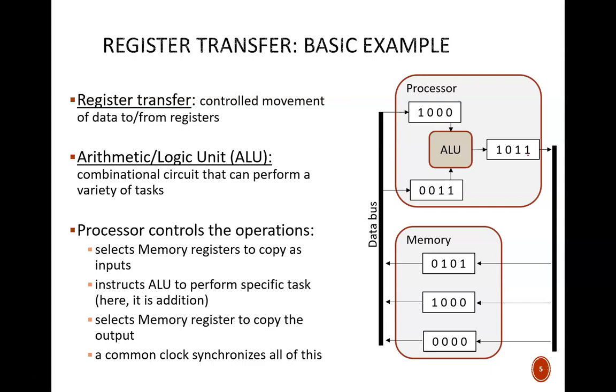The processor needs to do four things. First, it identifies the augend. This number 0011 is found in memory, transferred to the data bus, and then into this temporary register.